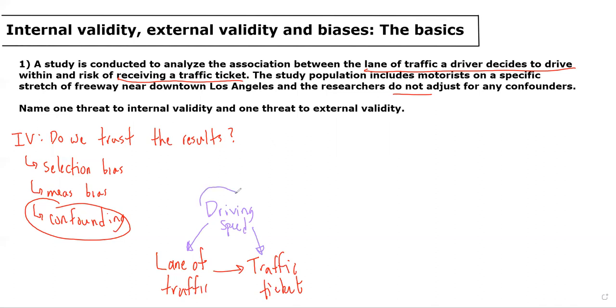So by not adjusting for driving speed, I would potentially be worried about confounding in this relationship, and that would be a threat to internal validity. And I would have appreciated if the researchers had adjusted for driving speed, as that would have given me higher confidence in their results and therefore higher internal validity.